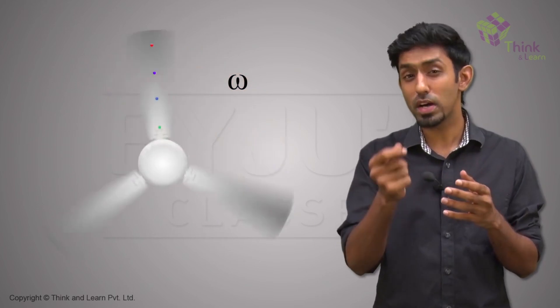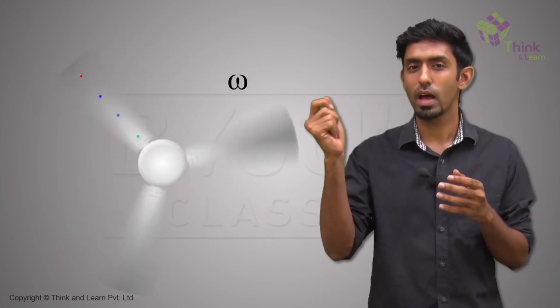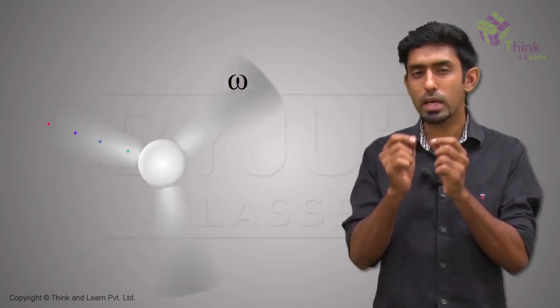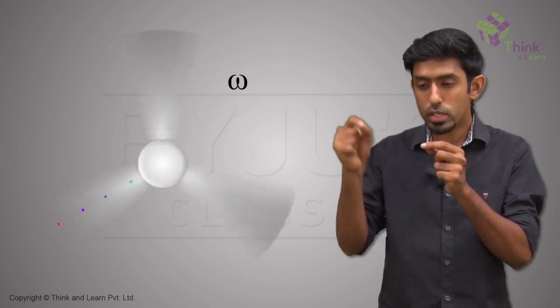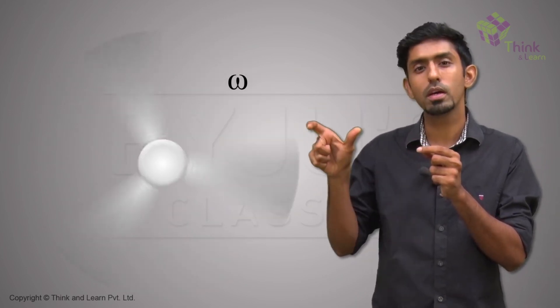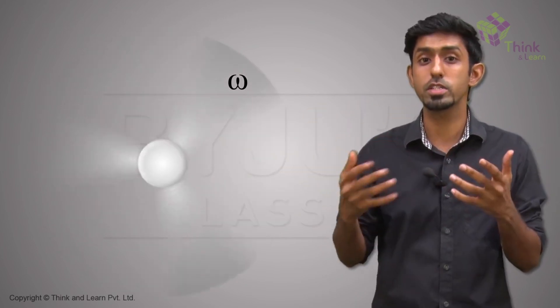And eventually, the fan will reach its final velocity. And after that, it will not increase its speed. So at that time, not only is the omega for all the points common, the omega itself with time is not changing anymore.